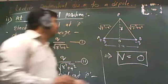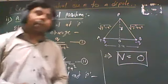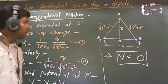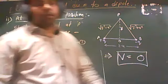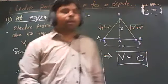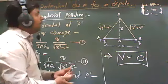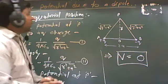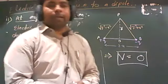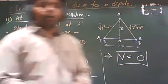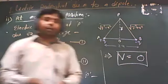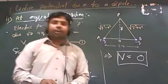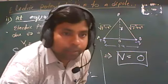So we have seen that at the equatorial position of a dipole, electric potential is zero, while at the axial position it is V equal to 1 upon 4 pi epsilon naught, P upon R squared. The topic 'at any point' will be covered in the next class as it requires more time. Until then, please look at example one in NCERT.